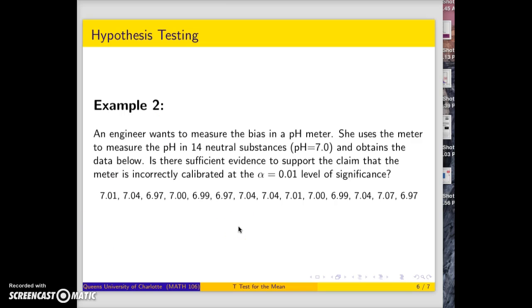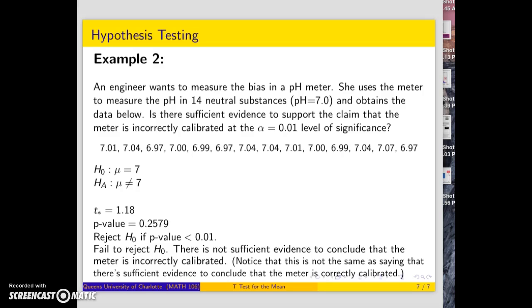Here are the values, and we want to know if the meter is incorrectly calibrated using α = 0.01. We want to know if μ differs from 7, because a neutral substance has a pH of 7. If it differs from 7 in either direction, we have an incorrectly calibrated meter.